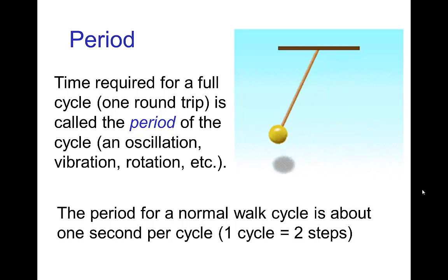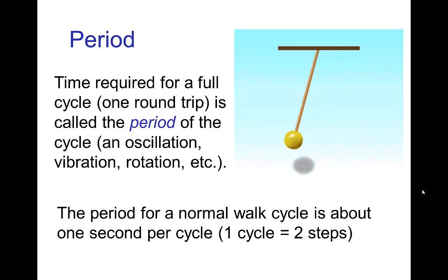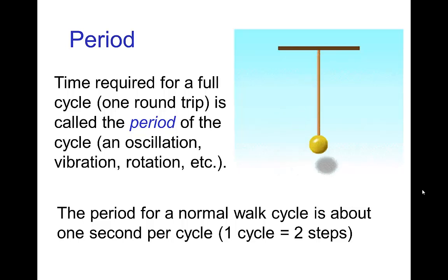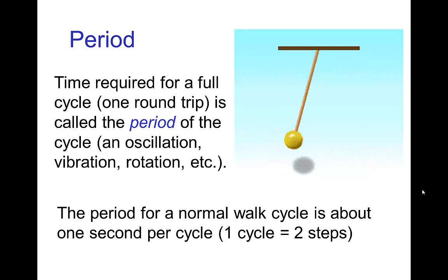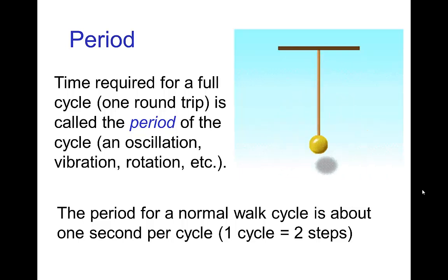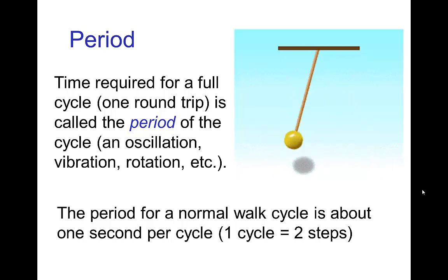The simplest one is the period for a cycle — that's the time it takes to do one full round trip, typically measured in seconds. For example, the period for a normal walk cycle would be about one second per cycle, meaning it takes about one second to complete two steps: left foot, right foot.